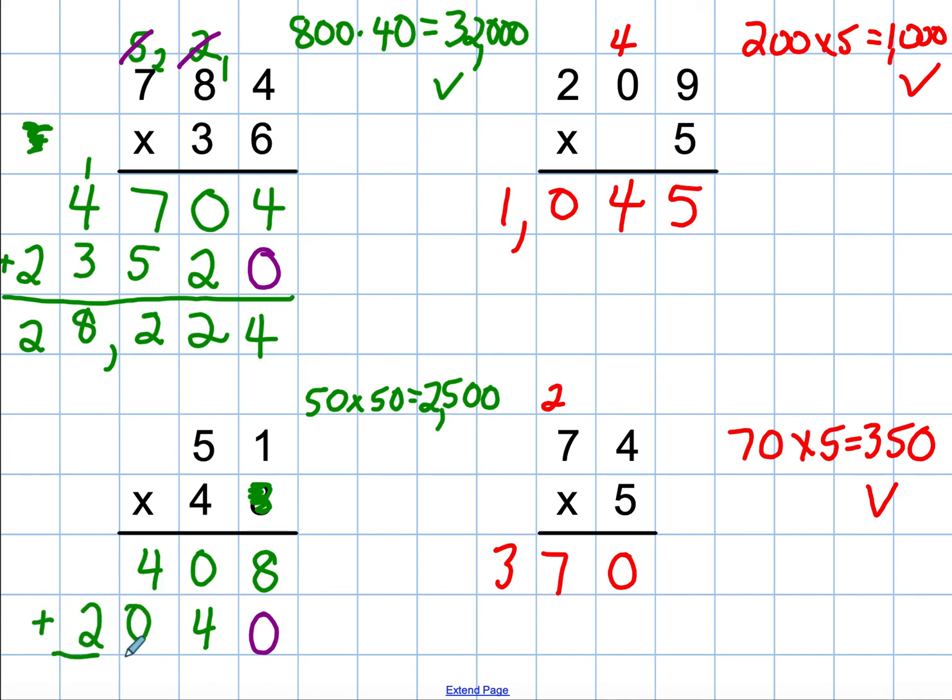And then I can add my partial products. 6. This is 8, 4, 4, and 2. 2,448, which is fairly close to 2,500. So I feel pretty reasonably assured that that is accurate.